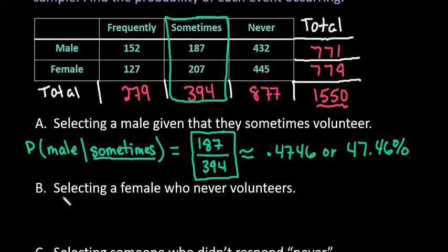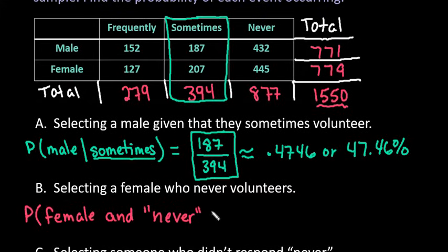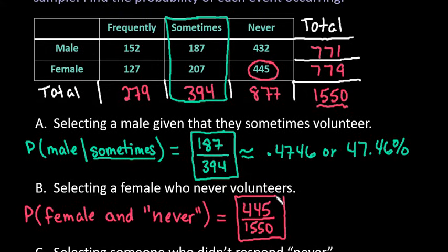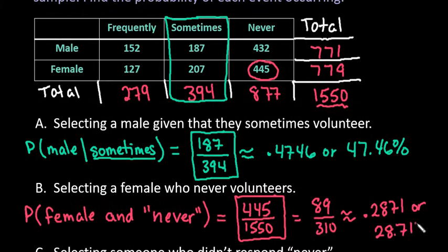Next question. Find the probability of selecting a female who never volunteers. So basically what we're looking for is that the person was a female and they responded never. We are looking at the overlap of female and never. We can see that 445 of all of our people were females and responded never, and then I would put this over 1550. You could also reduce this down to 89 over 310, or you could write it as a decimal or as a percent.